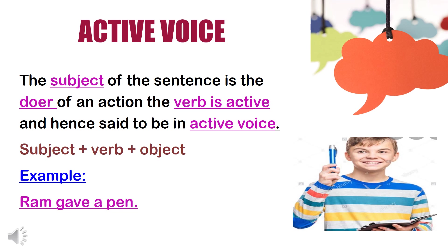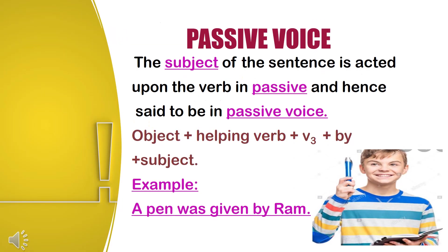Let's see the example. 'Wong gave a pen.' Here the subject is Wong and that's the action. In passive voice, when the subject of the sentence is acted upon, the verb is in passive and hence said to be in passive voice. The general formula in passive voice is object plus helping verb plus V3 plus by plus subject.